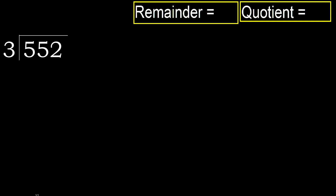552 divided by 3. 5 is not less, therefore with 5 — 3 multiplied by which number is nearest to 5 but not greater?